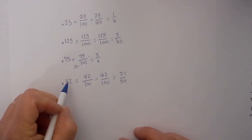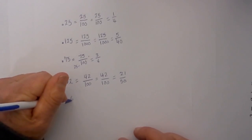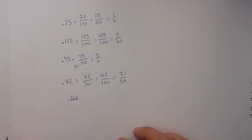Now repeating fractions like .666 is a different situation and you can follow this link and I will have a video that shows you how to convert a repeating decimal into a fraction.